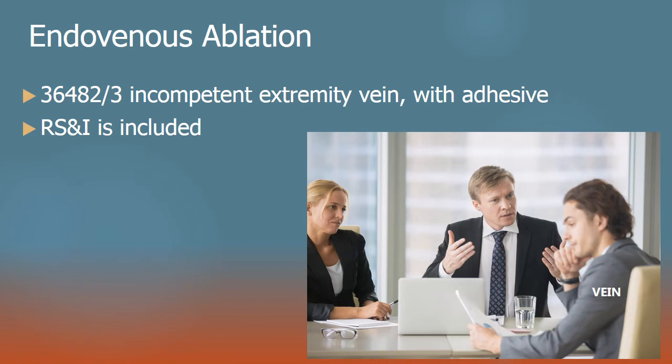For endovenous ablation, that's 36482 for the first and 36483 for additional incompetent extremity veins — with adhesive, like cyanoacrylate, which is essentially super glue. The radiographic supervision and interpretation is included. Just remember that if they inject super glue into a vein because it's dilated, varicose, or otherwise incompetent, those are your codes.